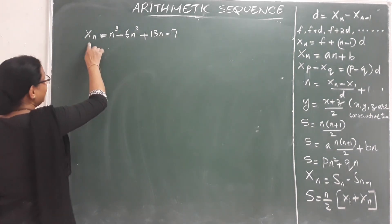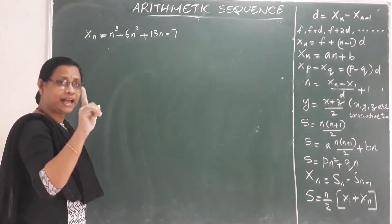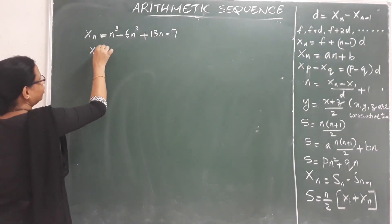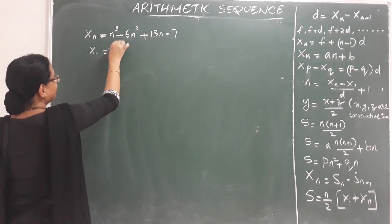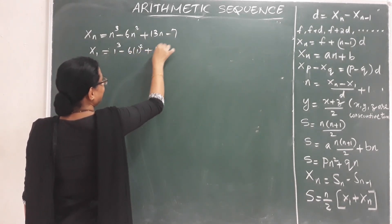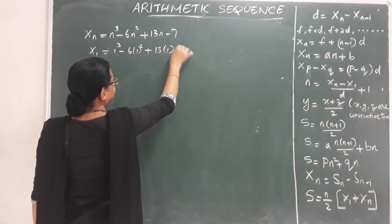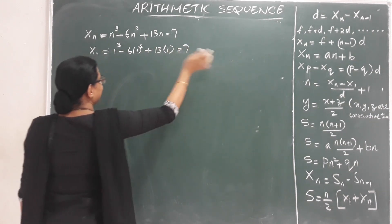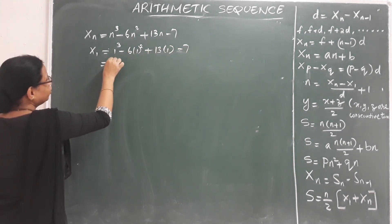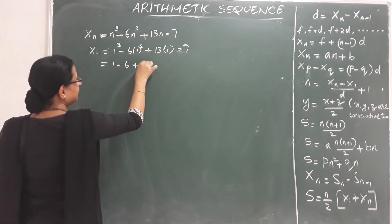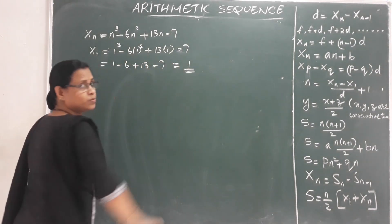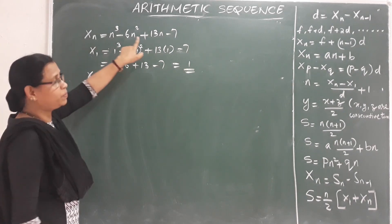I will substitute the first natural number, n=1: 1 cube minus 6 into 1 square plus 13 into 1 minus 7. This is equal to 1 minus 6 plus 13 minus 7, which equals 1. So x1 = 1.